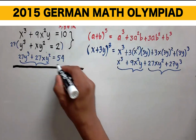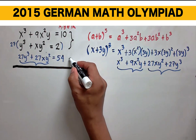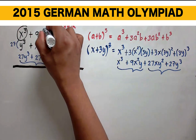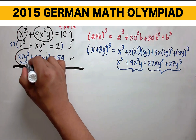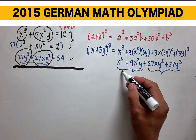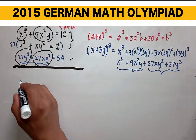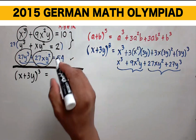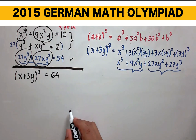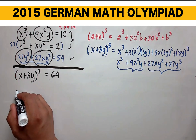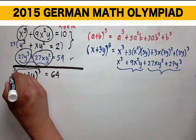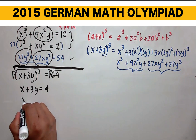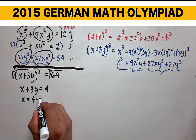Solving these two equations simultaneously — where the second equation is obtained by multiplying the original by 27 — if we add x cubed plus 9x squared y plus 27y cubed plus 27xy squared, that equals the binomial (x + 3y) raised to the third, and the right side becomes 10 plus 54, which equals 64. Since we are solving in the set of real numbers, we take the cube root of both sides, so x plus 3y equals 4, and solving for x, x equals 4 minus 3y.